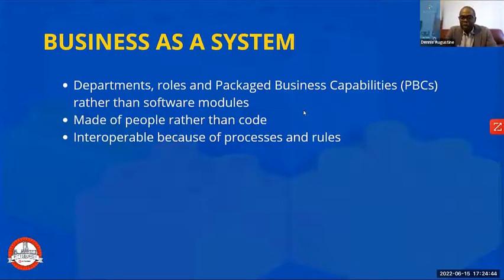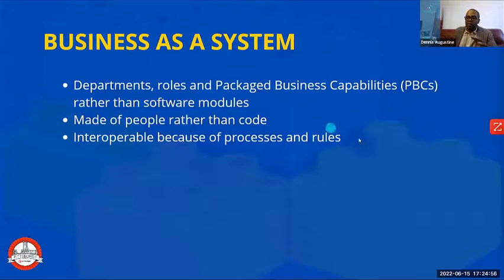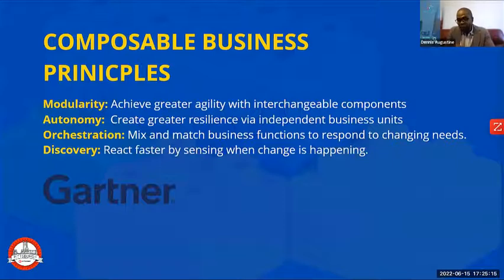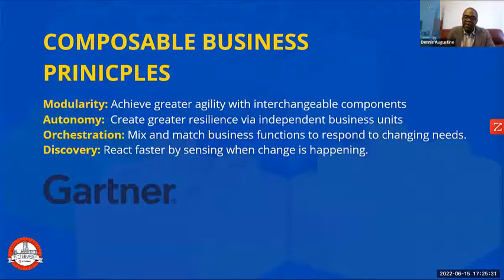Coming back to interoperability: when we think about business as a system, the processes are your interfaces between your various business units. Gartner started talking about composability back in 2019, saying the future of business is composable — and they were not talking about technology. There are certain principles that make a business truly composable, according to Gartner: modularity, autonomy, orchestration, and discovery.